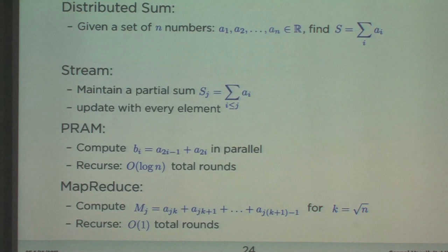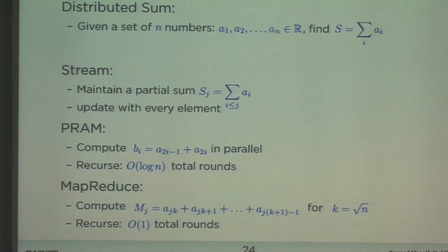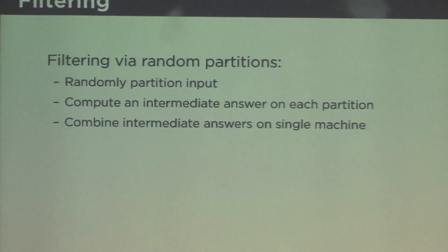So let's take the same approach here that we're using kind of in MapReduce and to some extent the PRAM of just randomly splitting the data, doing something on each one of the partitions, and then combining it back. So we're calling these filtering, and this is filtering via random partitions. We're going to randomly split, we're going to combine the intermediate answers, and we're going to compute the final answers on a single machine. This is exactly what we did with the sum.